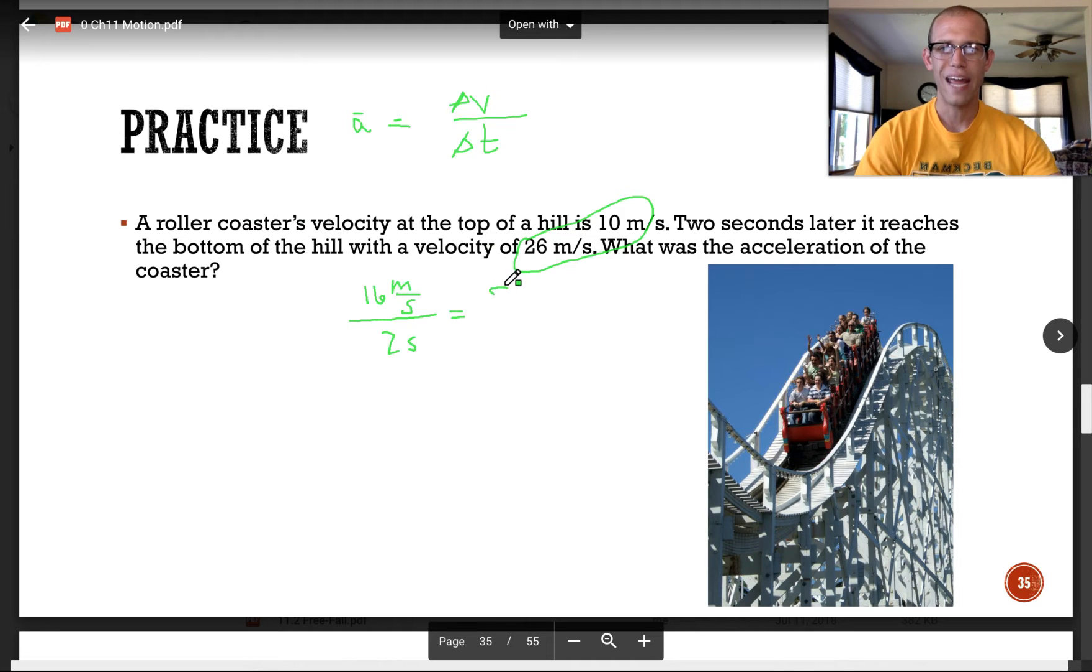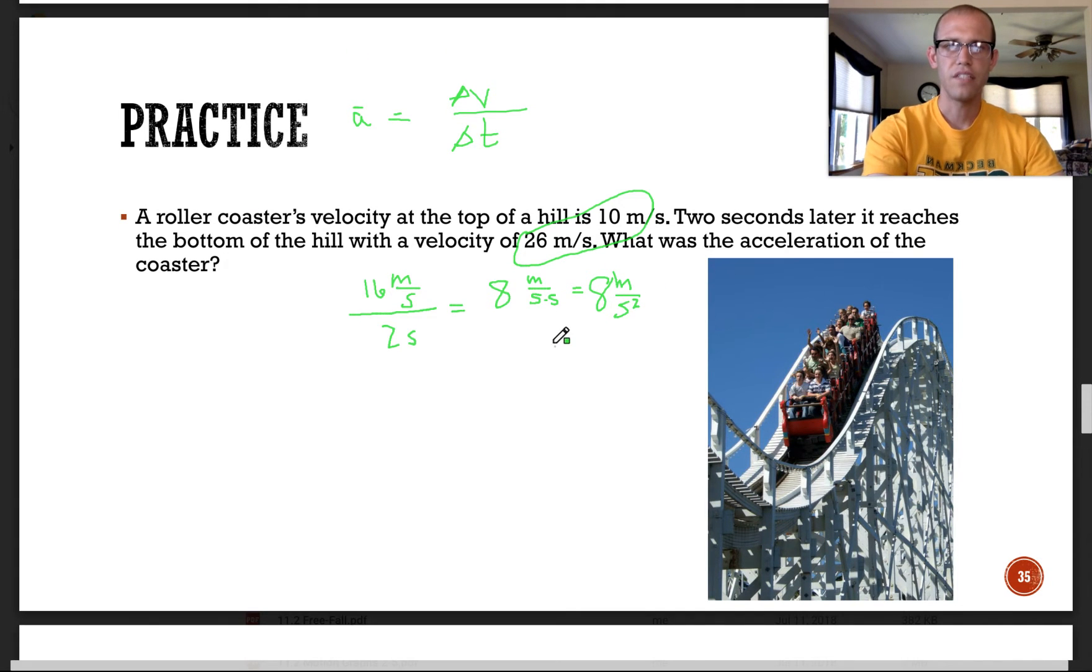And meters per second divided by a second will give us out meters per second, divided by another second. Or you could just say 8 meters per second squared is what people commonly do. And sig figs for this would be only one because we are using division. The 10 only has one. The 26 has two. So our answer will only have one sig fig. So that would be correct.